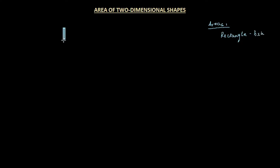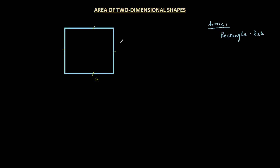Now let's look at a square. In a square, all sides are equal — let the side length be S. Since the area of a rectangle is base times height, the area of a square, being a similar shape, will also be base times height. Since the base and height are both S, it should be S times S, or S squared. So the area of a square is nothing but the square of the side, or S².